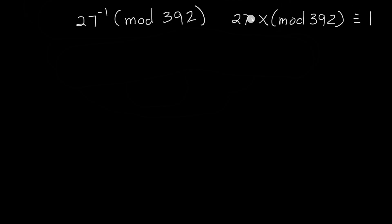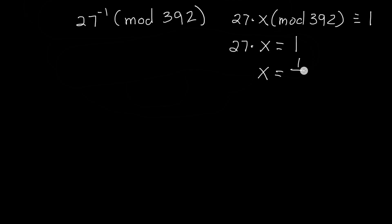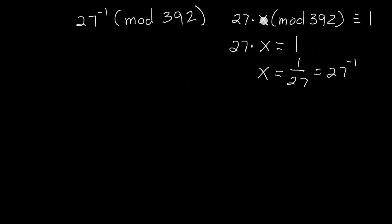So why is that exactly? Well, if we have 27 times x is equal to 1, and we divide both sides by 27, we get x is equal to 1 divided by 27 — essentially 27 inverse, or 27 to the minus 1. So if we can find some number x such that 27 times x maps to the value 1 when we're dealing with mod 392, then x will be the inverse of 27.